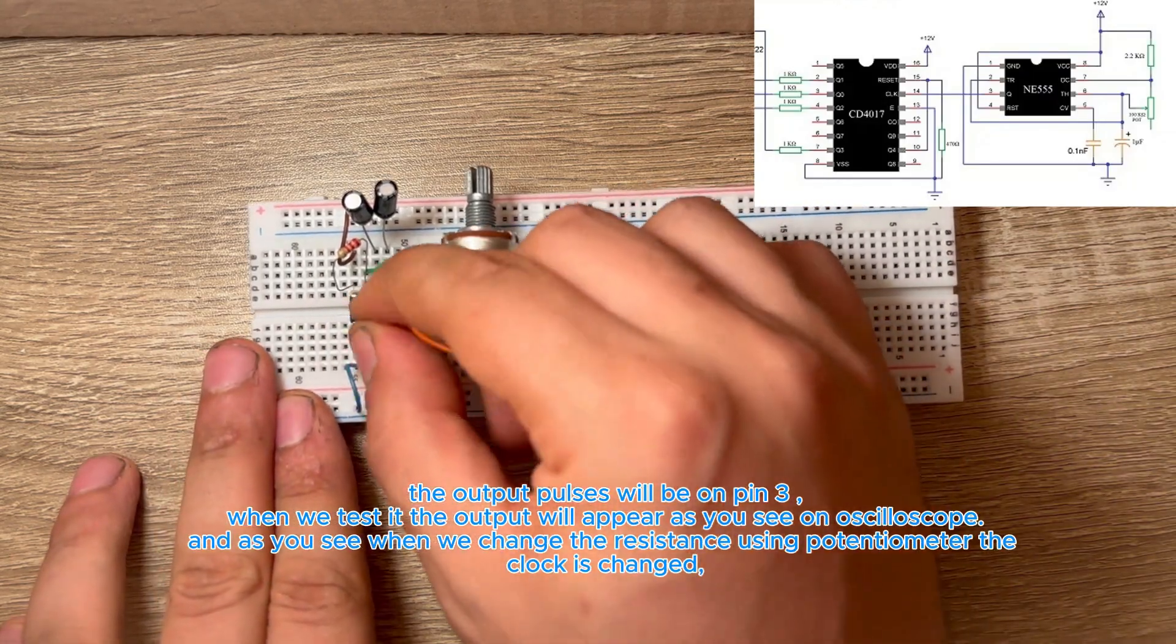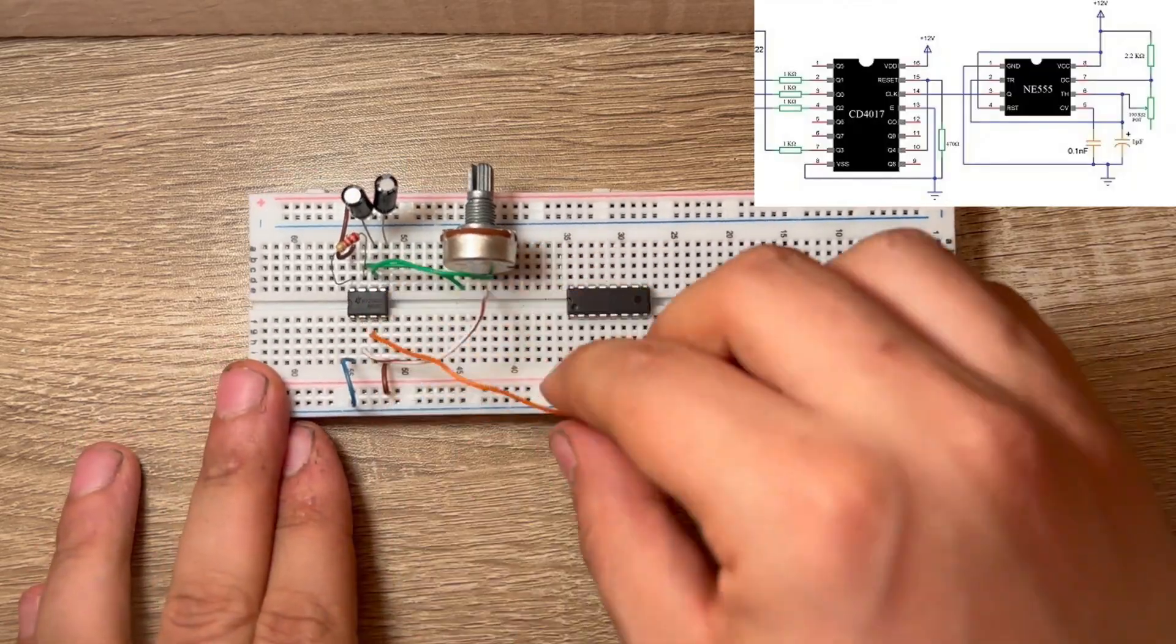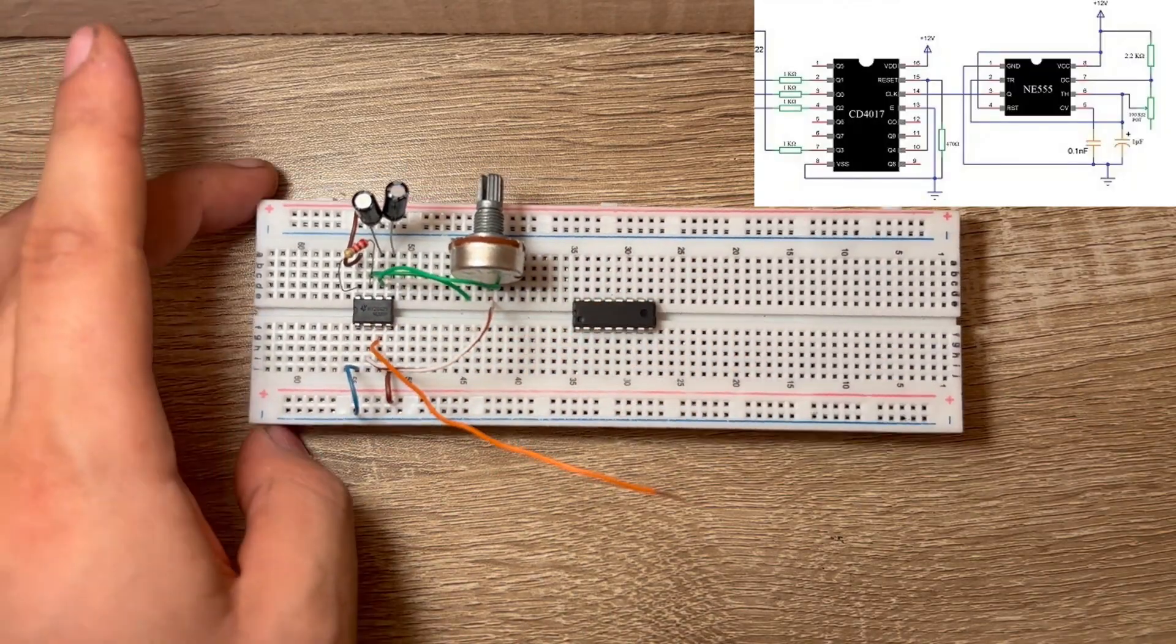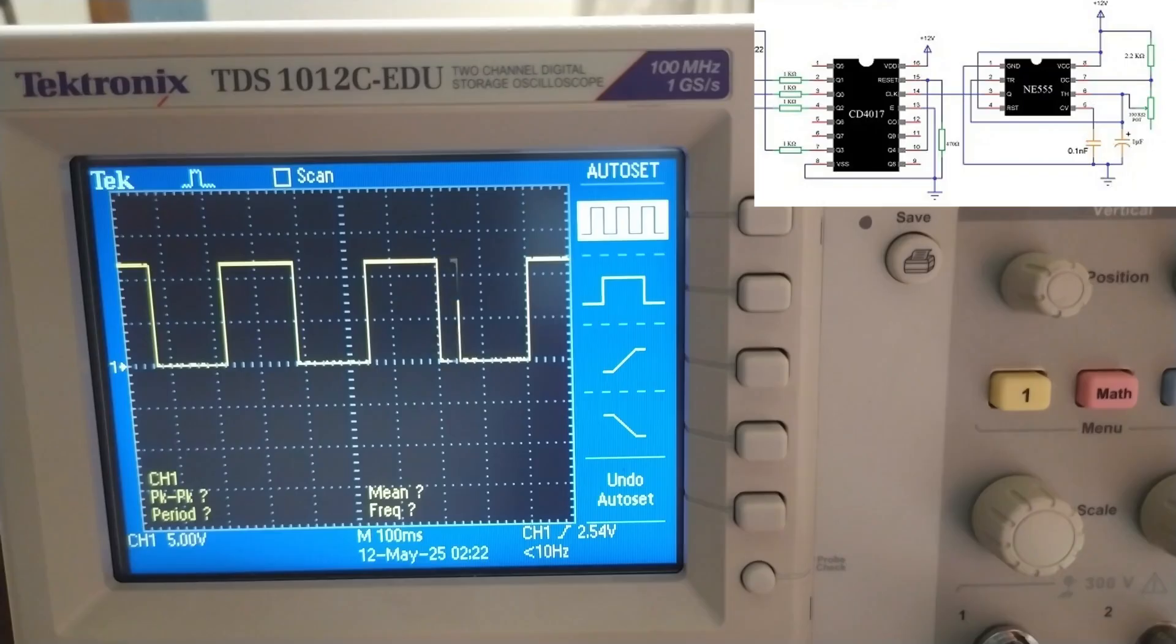The output pulses will be on pin 3. When we test it, the output will appear as you see on the oscilloscope. As you see, when we change the resistance using the potentiometer, the clock is changed.